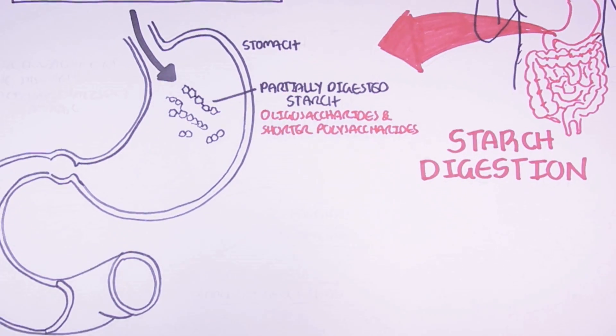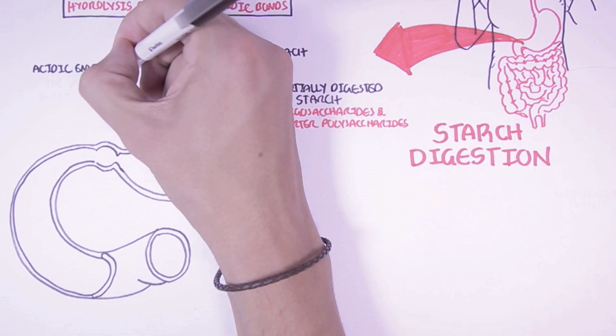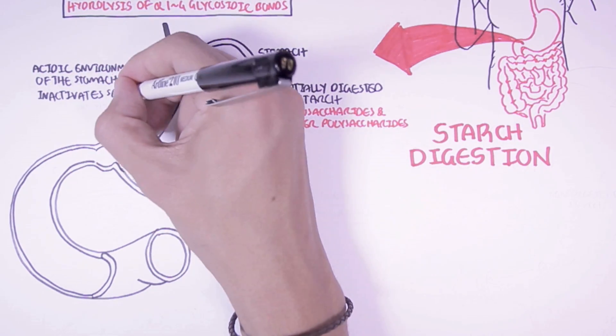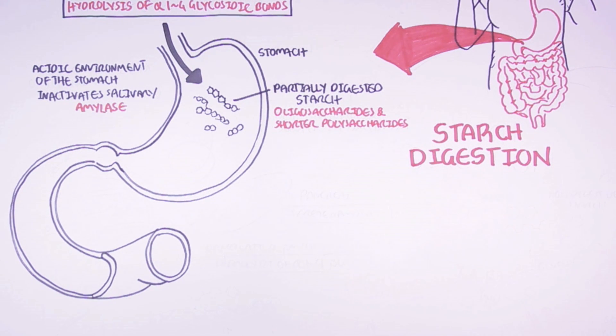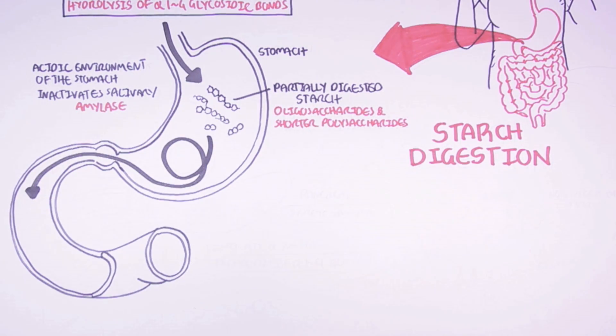Once it reaches the stomach, starch is only hydrolyzed partially because once the starch comes down the esophagus into the stomach, the amylase becomes inactivated. This is because the acidic environment of the stomach actually inactivates the salivary amylase. And so starch digestion does not occur within the stomach. The stomach will only mix the content around and then allow the starch to reach the small intestine.